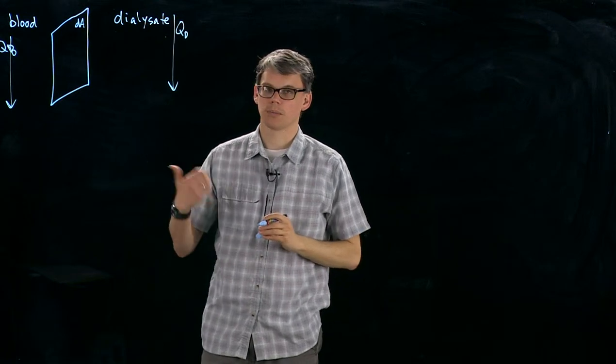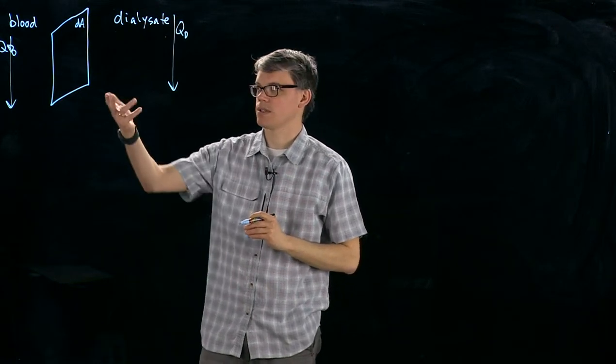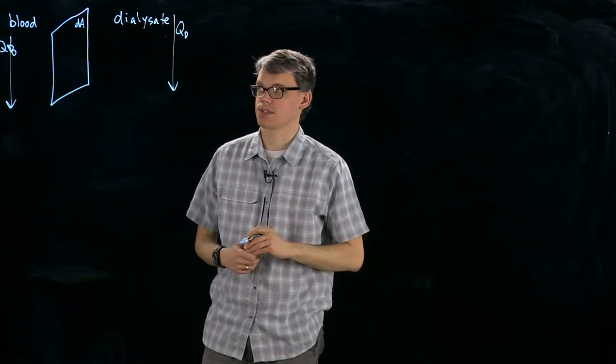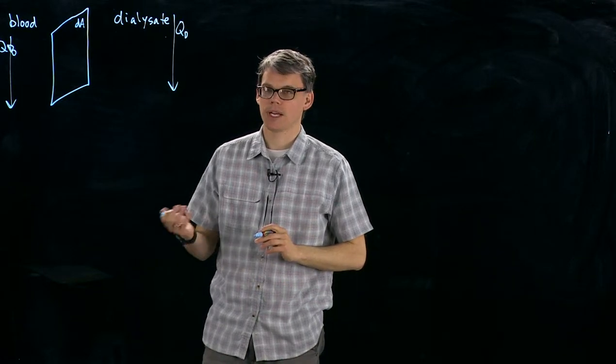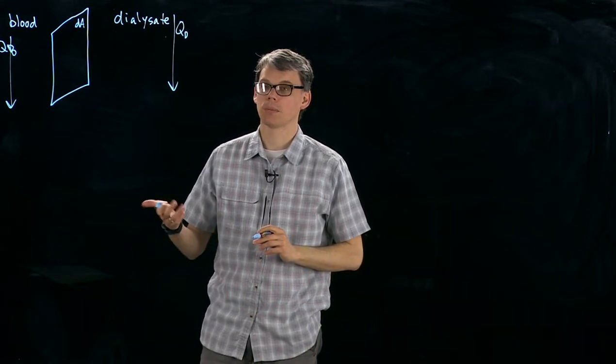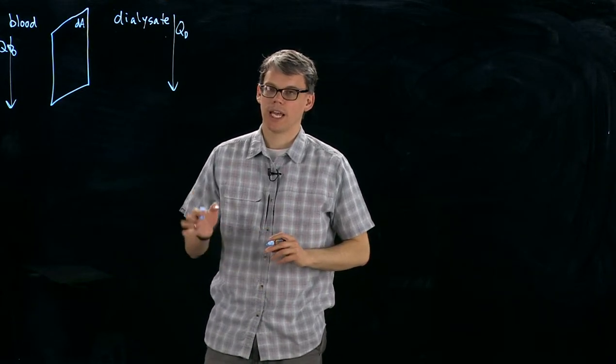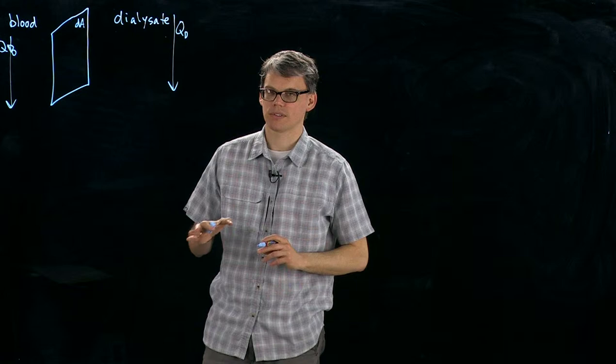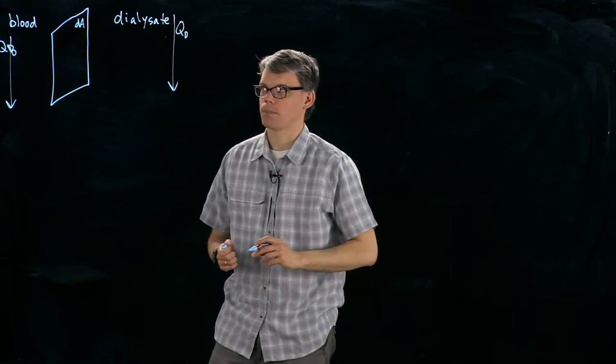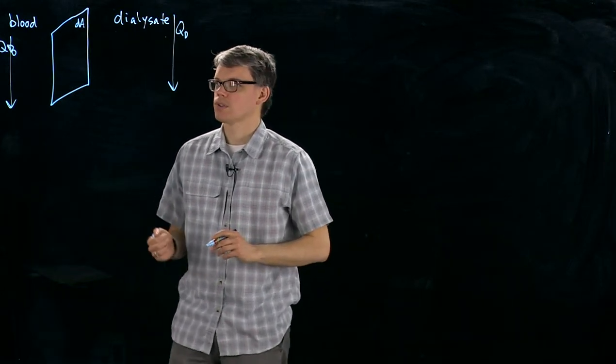This is called a co-current or parallel flow dialyser because the blood and the dialysate are flowing in the same direction. In lab, you might have a co-current dialyser, or you might have a counter-current dialyser in which the blood and the dialysate are moving in different directions, and some of the equations we work out today will be slightly different. We'll look at those in workshop.